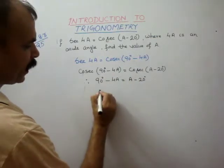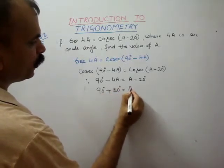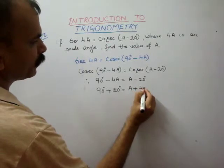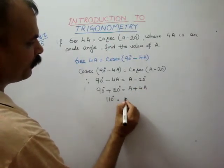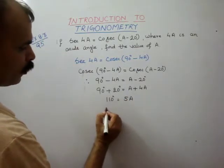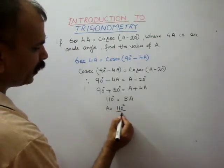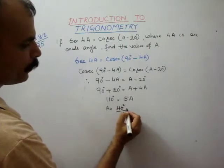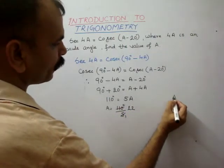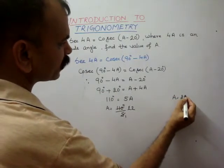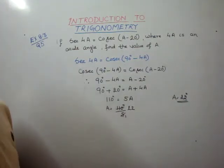Taking angles to one side, we get 90 degrees plus 20 degrees is equal to A plus 4A. So 110 degrees is equal to 5A. Therefore A is equal to 110 degrees divided by 5, which gives us A equals 22 degrees. That means angle A is 22 degrees.